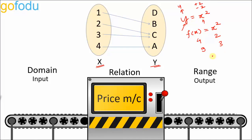For example, y = ±√x is not a function. If we put x as 2, y will have two values: +√2 and −√2. For one value of x there should be one and only one value of y.